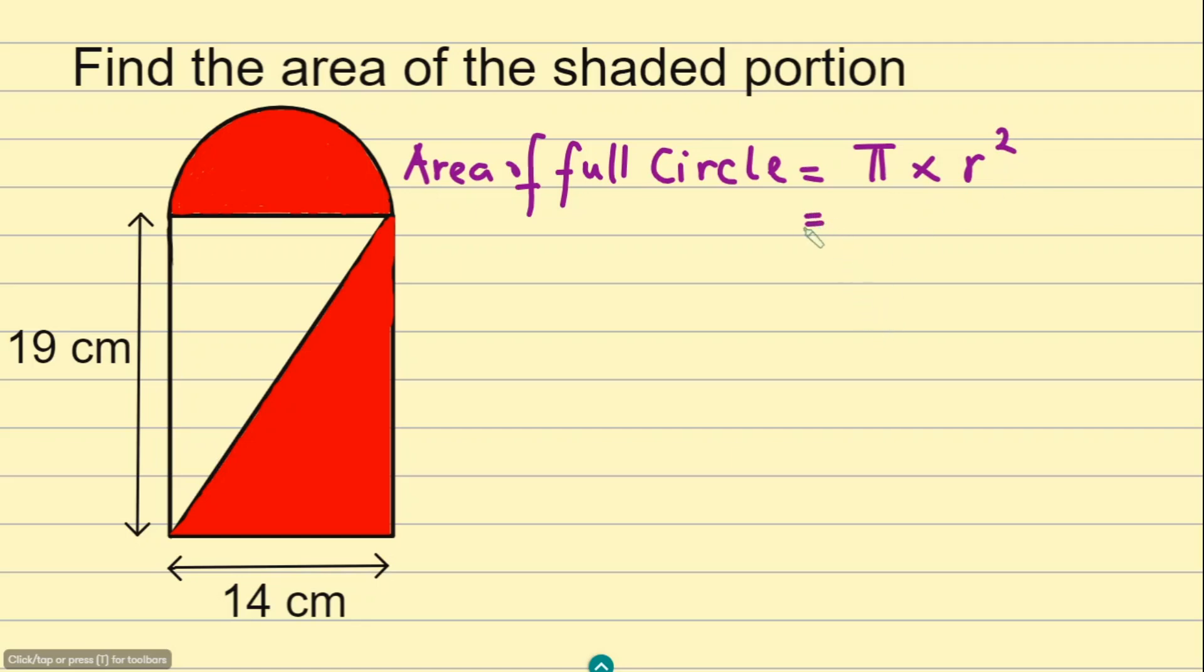Pi is given by 22/7, or sometimes 3.142, and then multiply this by the radius. If you look at the shape, you can find that this distance on the bottom represents the diameter. The diameter is twice the radius, so if the diameter is 14 centimeters, the radius is going to be half of it, which is 7.